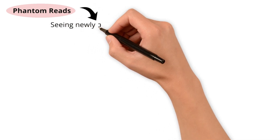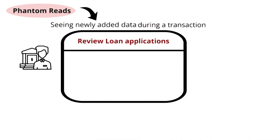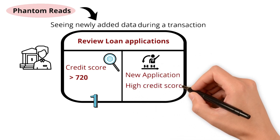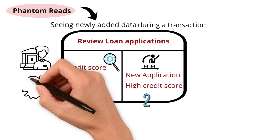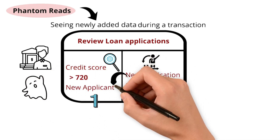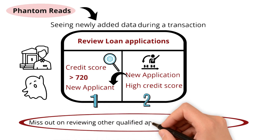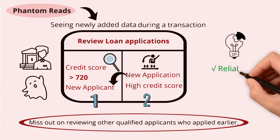Another inconsistency is phantom read — seeing newly added data during a transaction. Say you are a loan officer reviewing loan applications. You search the system for applicants with a credit score exceeding 720. While you are reviewing potential borrowers, a new application comes in and gets approved, adding someone with a high credit score due to a new data insertion by another concurrent transaction. Due to a phantom read, you might see this new applicant in your search results even though they were not there initially, potentially causing you to miss reviewing other qualified applicants. By understanding isolation, you ensure reliable data in concurrent scenarios.